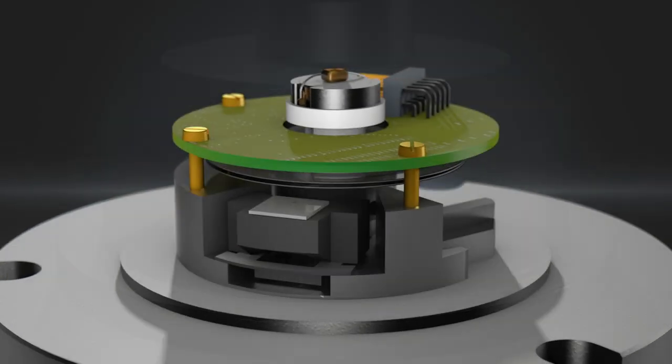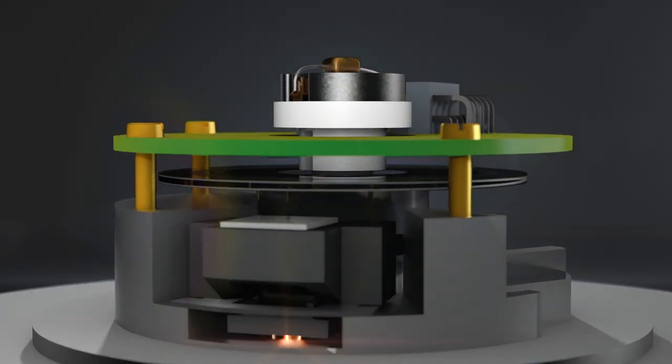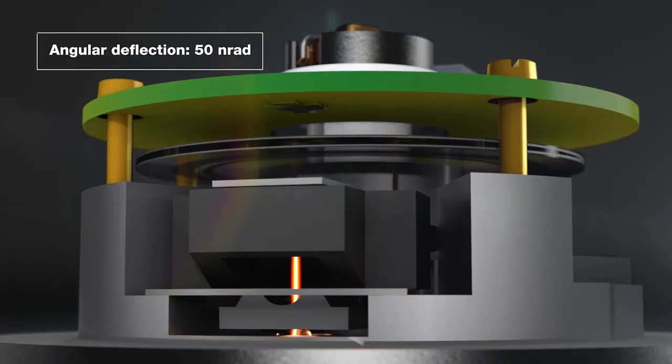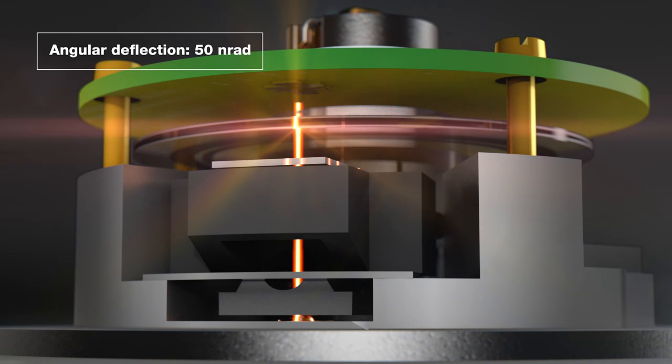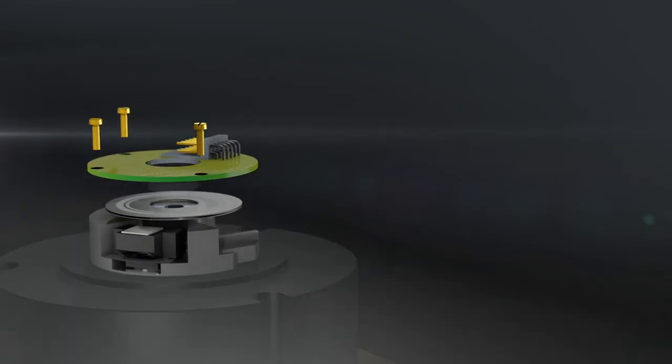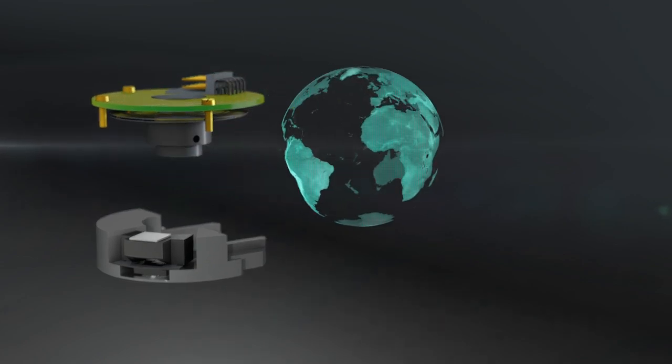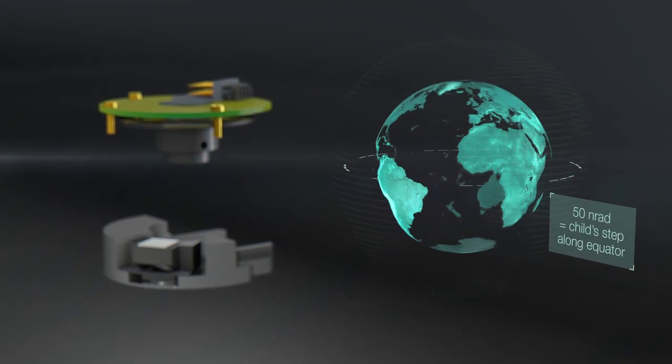A high-resolution optical encoder allows the setting of exceedingly small angular deflections, down to 50 nanorad – the equivalent of a child's small step along the Earth's equator. One small step for a child, one big step for rheology.